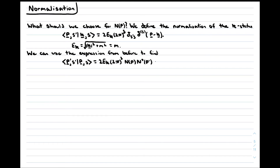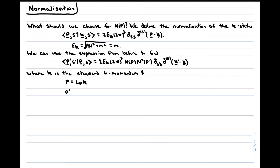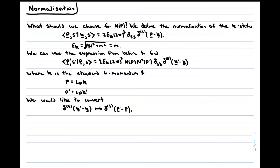Both of these momenta are related to p and p' by the same Lorentz transformation — p is L(p) acting on k, and p' is L(p) acting on k'. We would like to convert the three-dimensional delta function δ³(k' - k) into a delta function in terms of p' and p. However, the delta function is not a Lorentz invariant function, so we'll have to work out its Lorentz transformation properties.